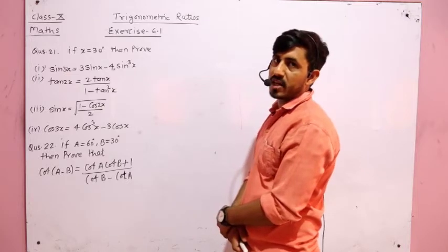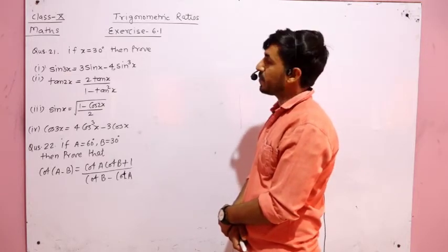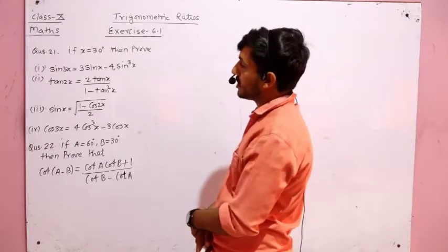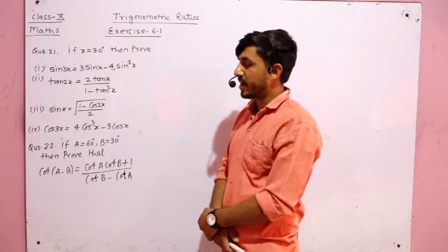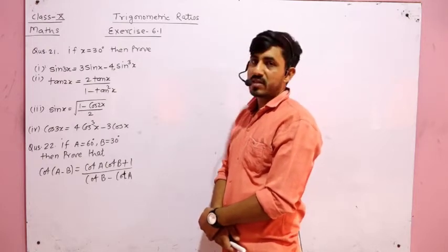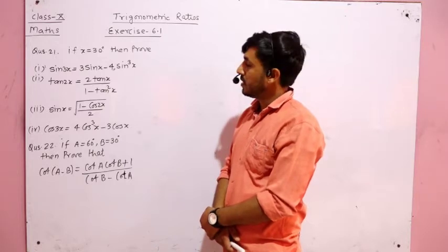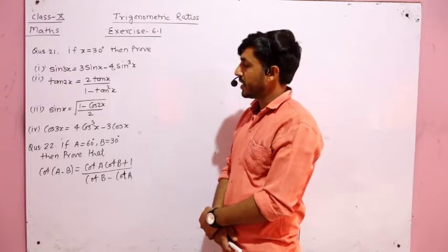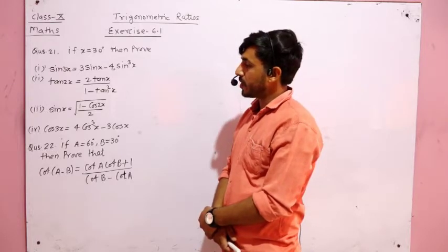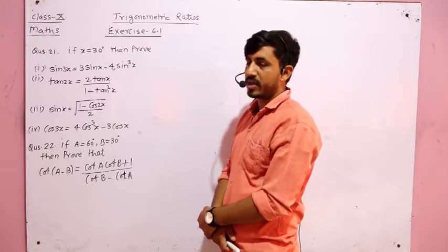In question number 21, given that x is equal to 30 degrees, we have to prove four parts: first, sin 3x = 3 sin x − 4 sin³ x; second, tan 2x = 2 tan x / (1 − tan² x); third, sin x = √((1 − cos 2x) / 2); and fourth, cos 3x = 4 cos³ x − 3 cos x.